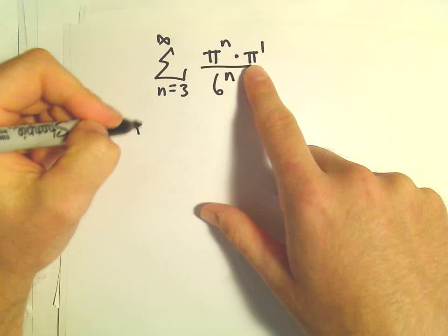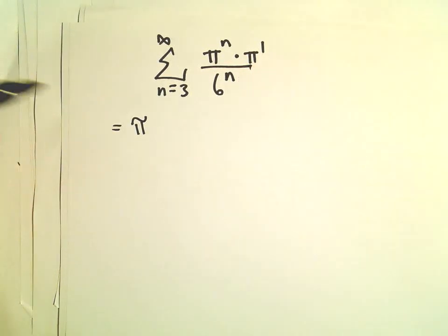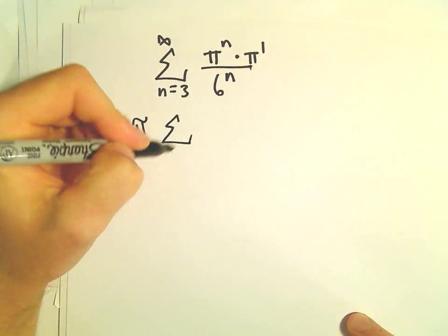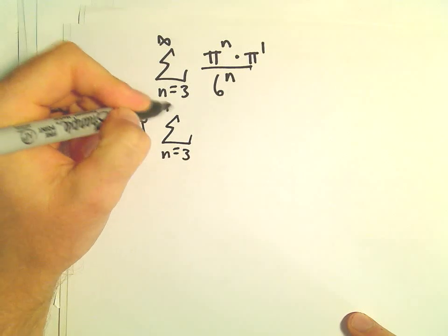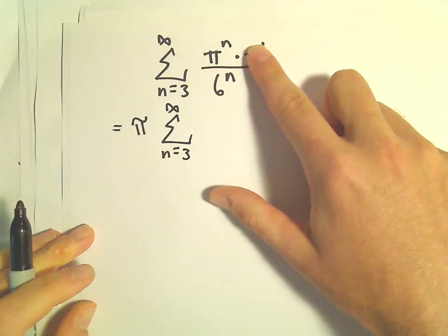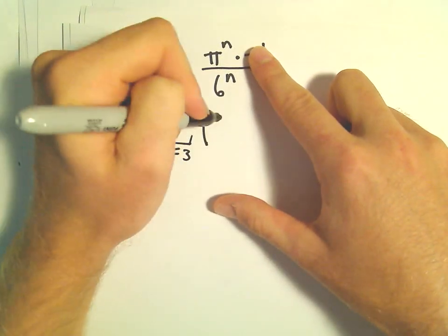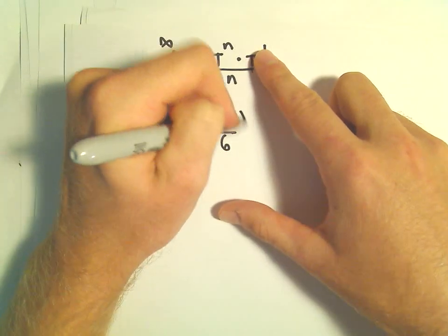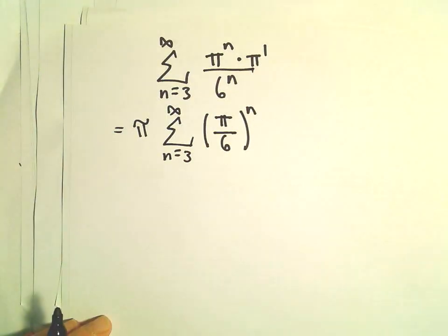Okay, pi is just a constant. We can factor that out front. And then we'll be left with pi to the n over 6 to the n, but we can simply write that as pi over 6 raised to the n.